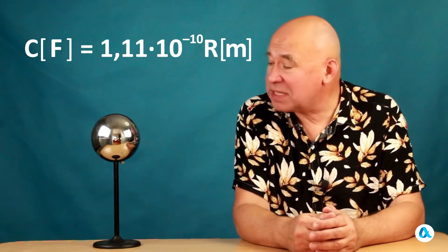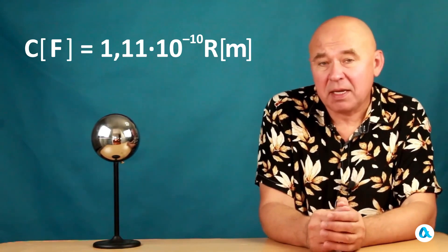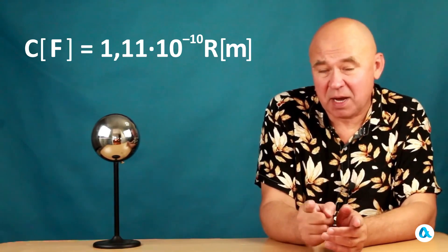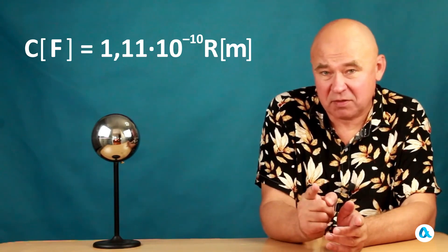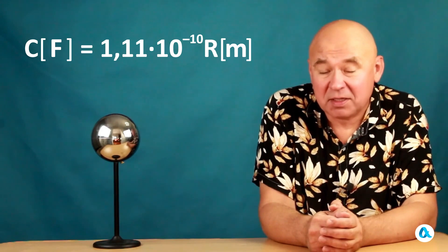Well, specifically for this sphere, the radius is 6 centimeters, and therefore its capacitance is 6.6 × 10⁻¹² farads, which is 6.6 picofarads.